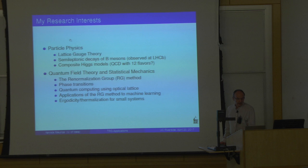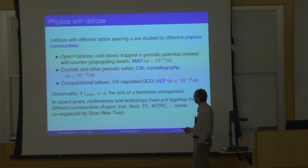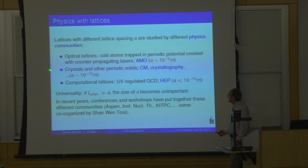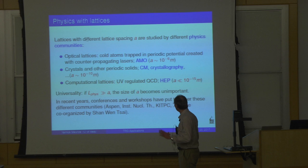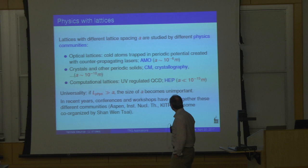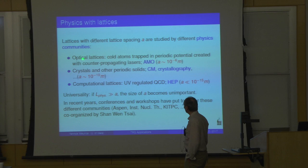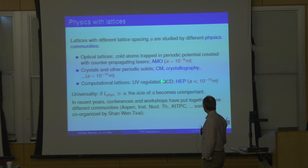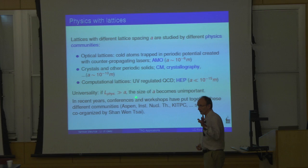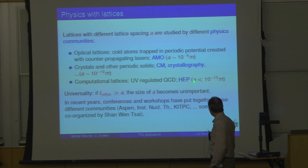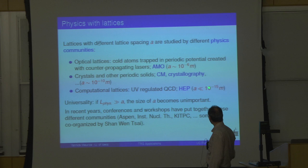Lattices are periodic structures you are probably very familiar with. Feel free to interrupt at any time — I want the basic message to be well understood. There are different physics communities who deal with lattices. Starting with the smallest lattice spacing: people who do lattice QCD use it as an ultraviolet regulator. This is not a physical entity — you want it to be as small as possible, typically a small fraction of a Fermi, so you don't see too much lattice artifact.